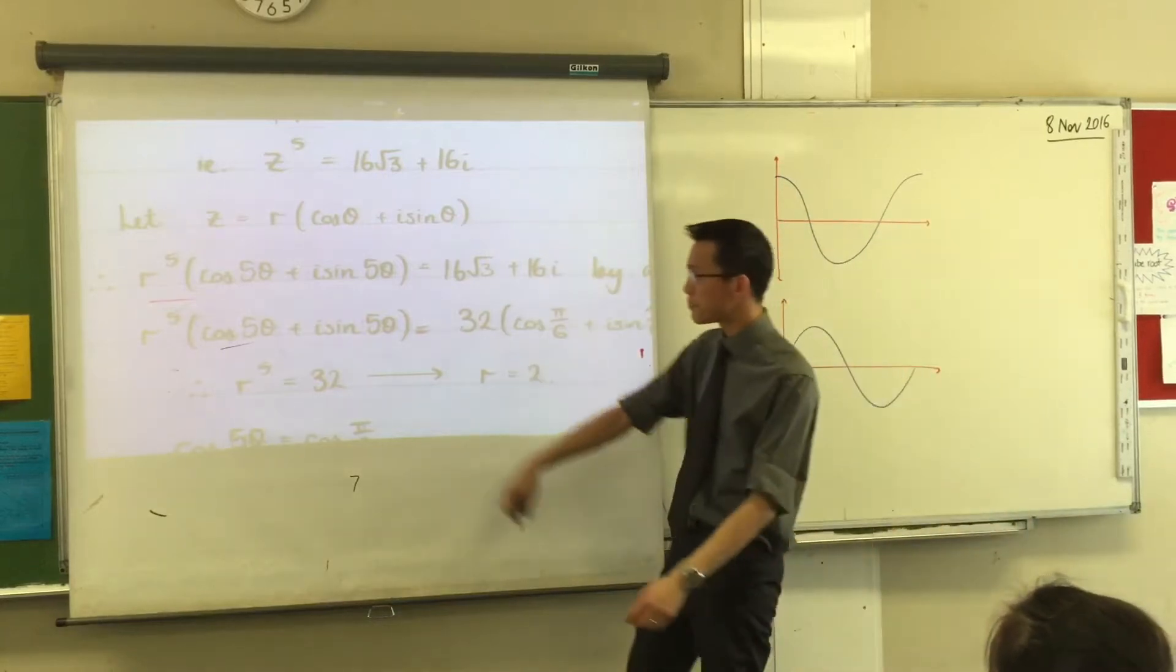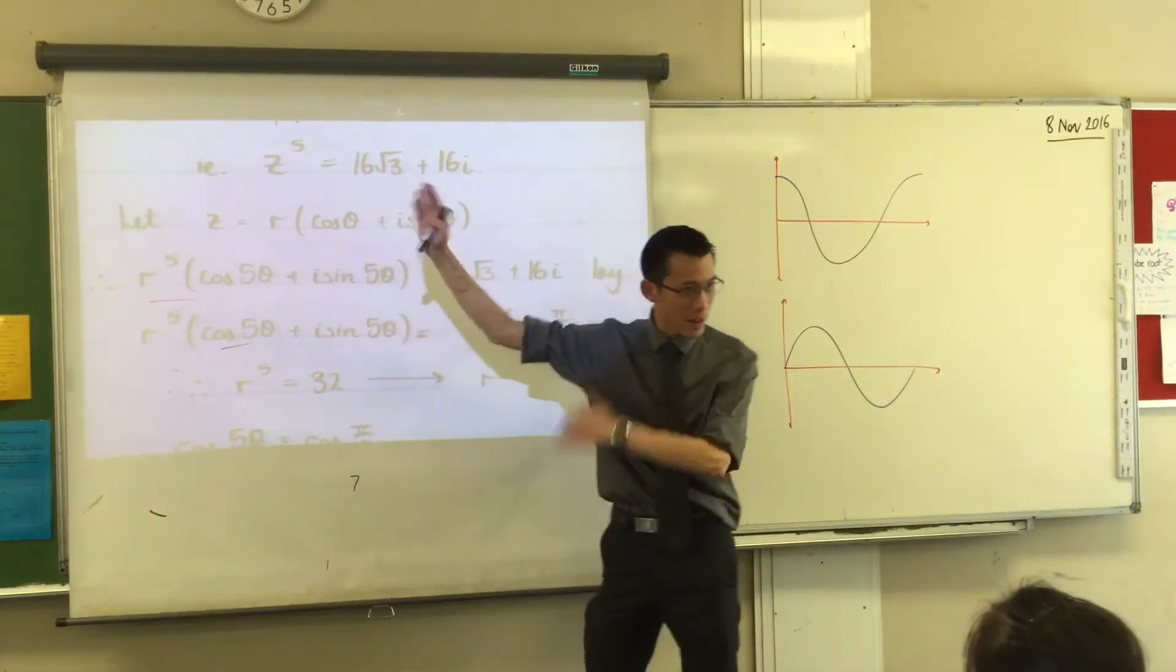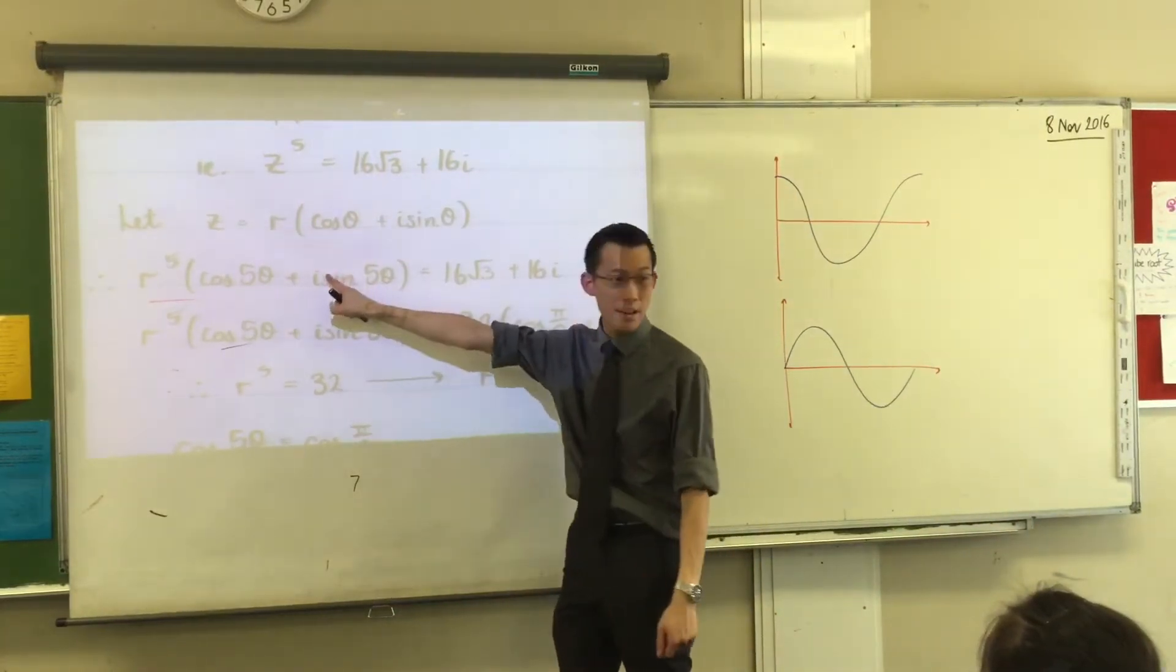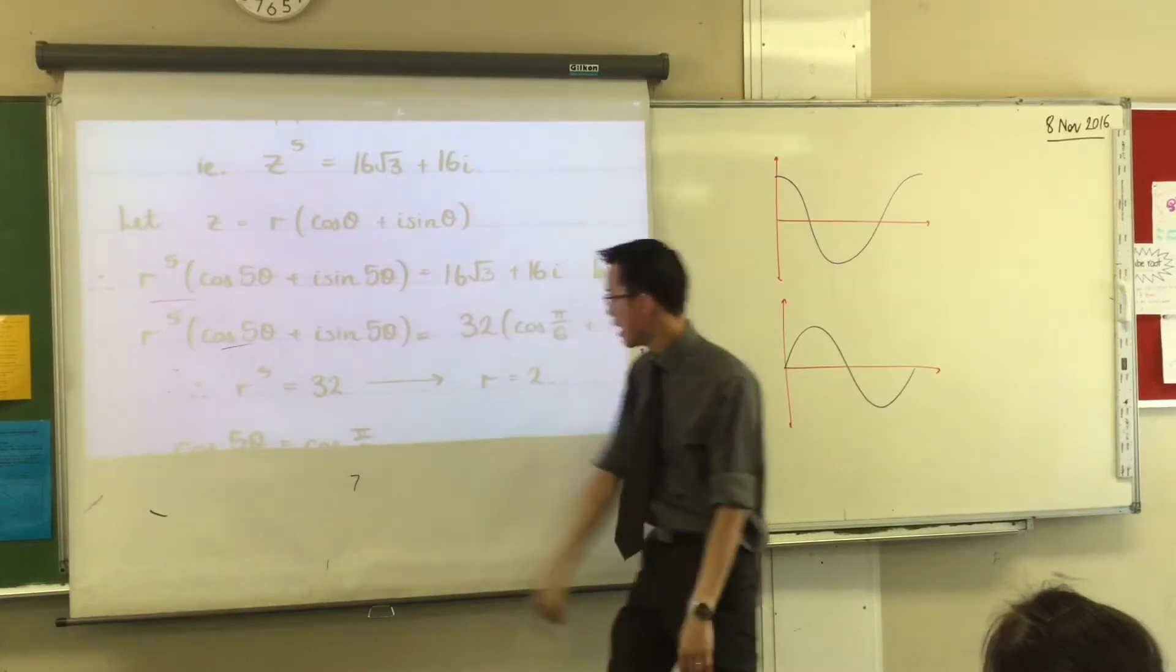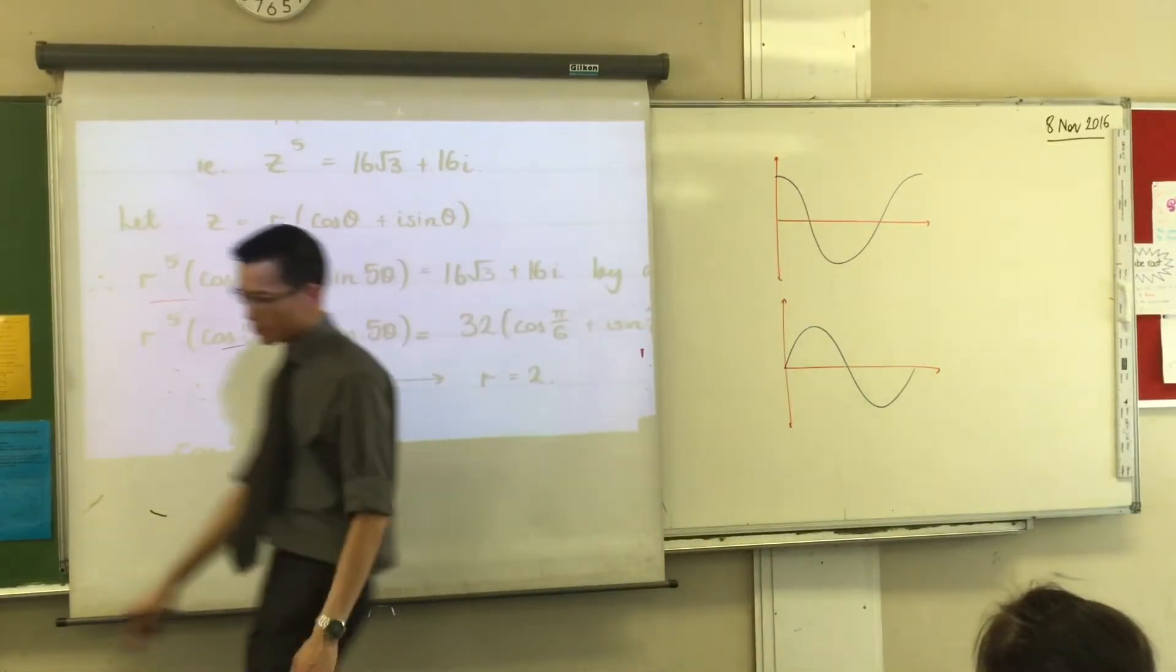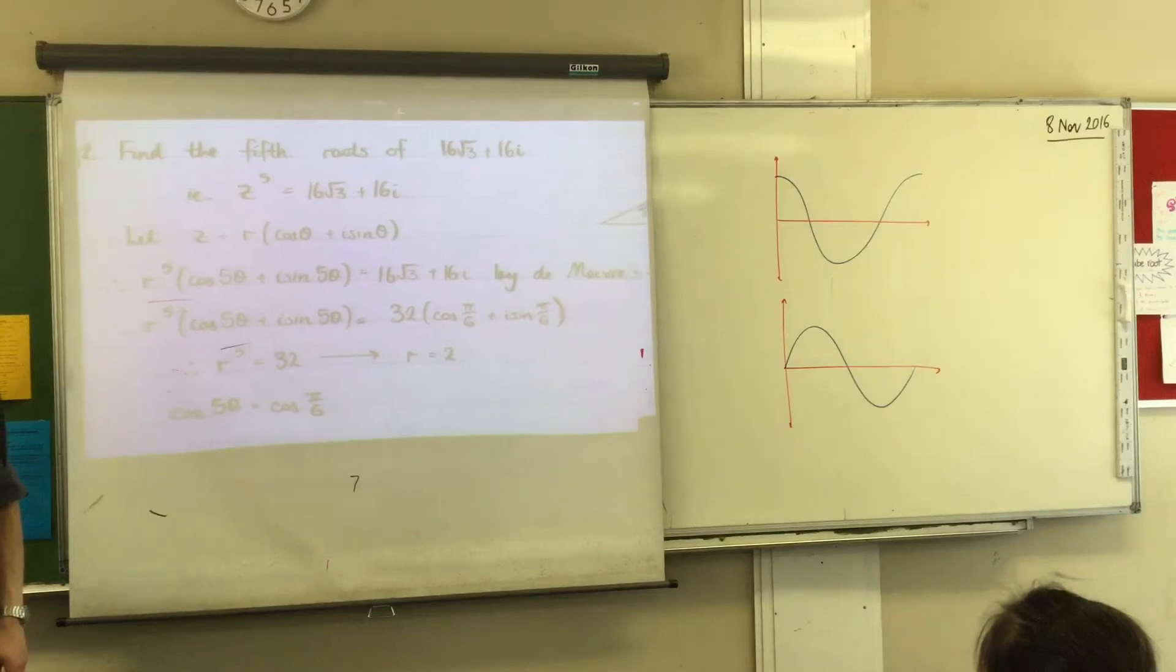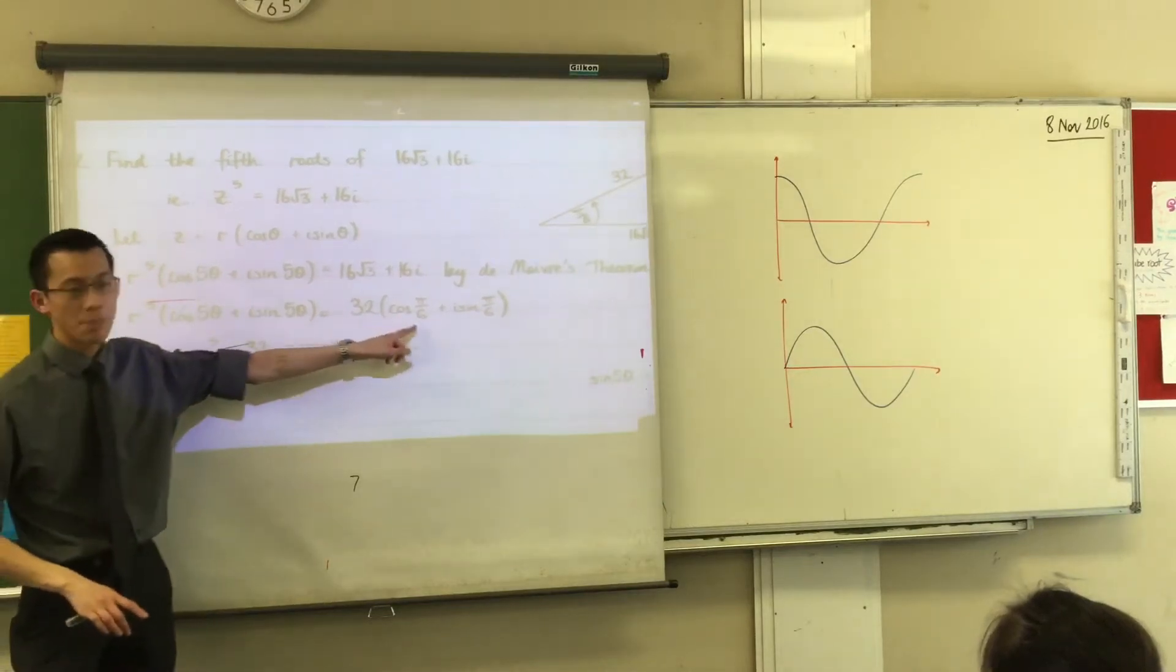So that's why the first thing I've done, after describing the number in polar form, I've said, okay, well that's that in polar form using De Moivre's theorem. And this over here, 16√3 + 16i in polar form.